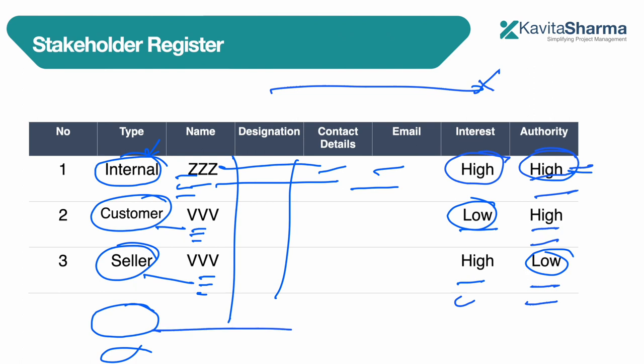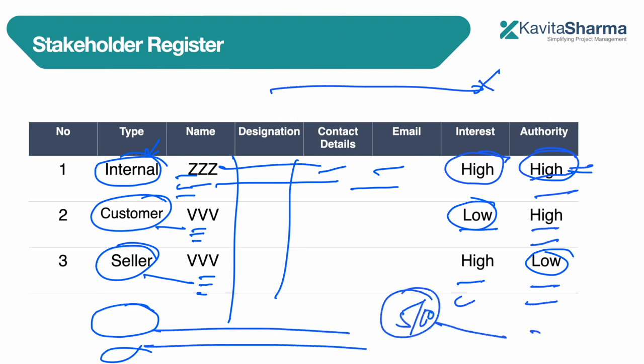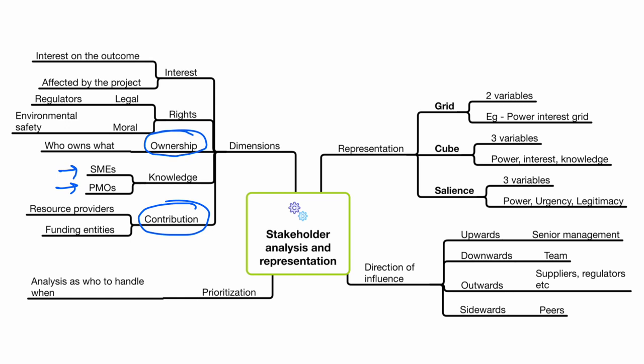The stakeholder register should not have just 5 or 10 names — it should have at least 20-25 names, even for a very small project. If a stakeholder request comes, who do you respond to first — the CIO's mail or your team member's request for data? That is prioritization.